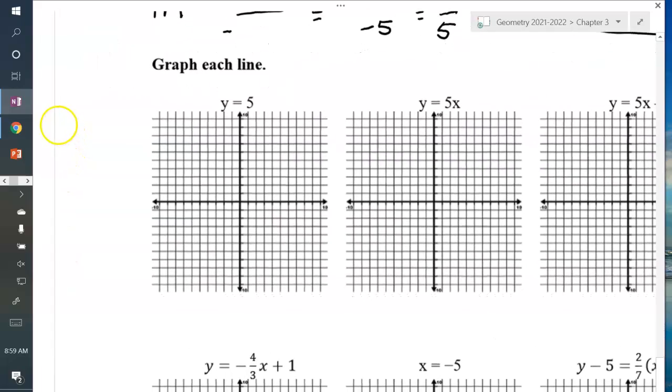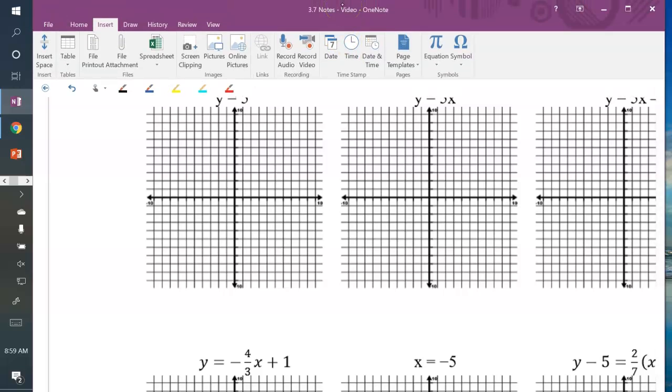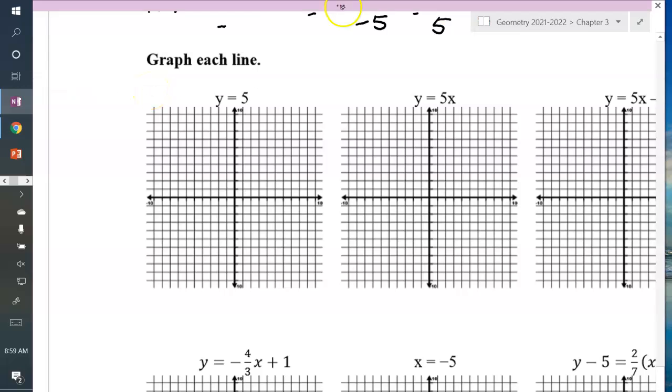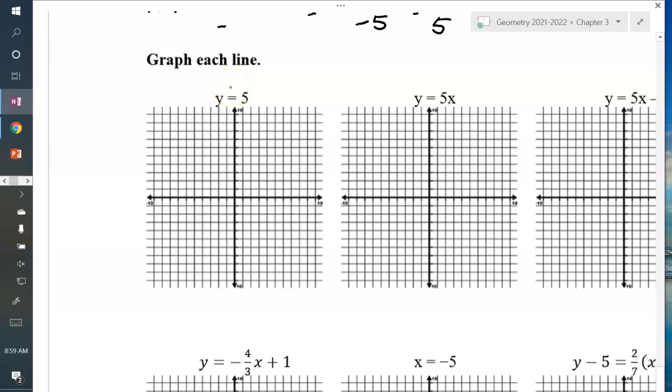Okay, now we're going to graph some lines. This one is line y equals 5. I'm going to change colors just to make it easier to see the line I'm graphing. So y equals 5. I'm going to come up to 5. 1, 2, 3, 4, 5. y equals, that means horizontal. So right through here. There's my line.